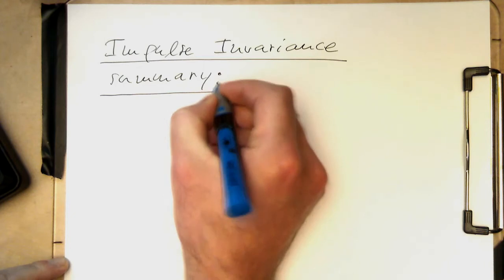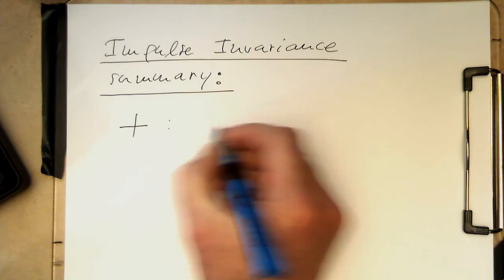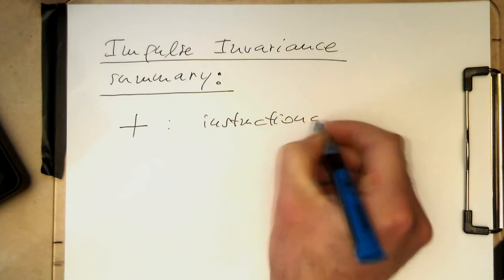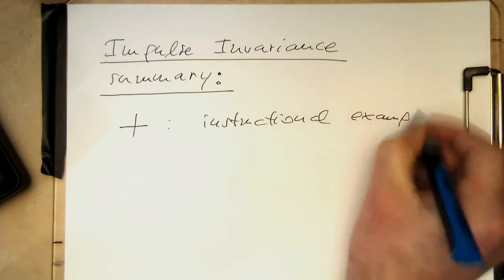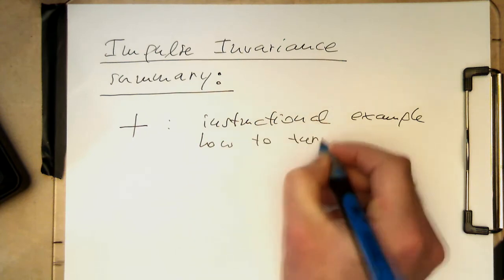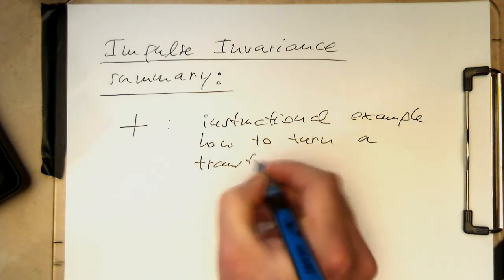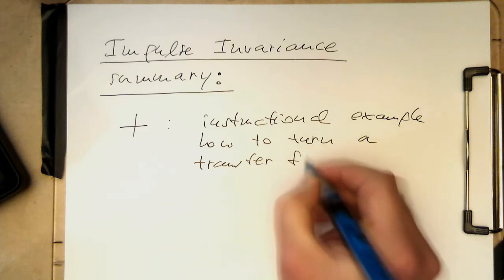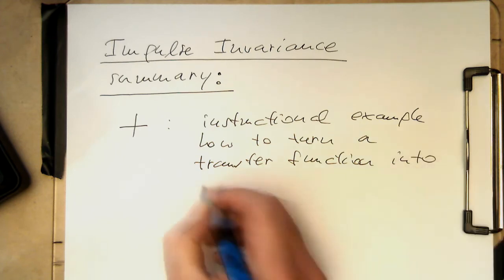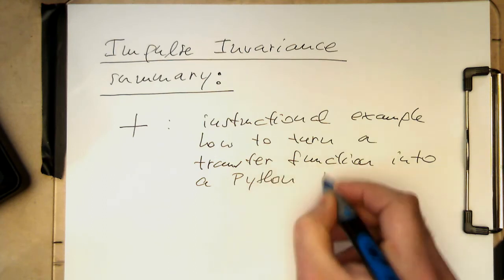On the big plus side, it's a very nice instructional example - how to turn a transfer function into a Python IIR class.